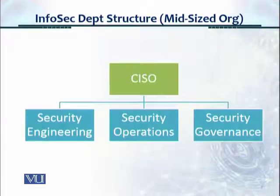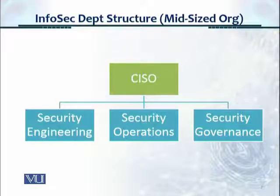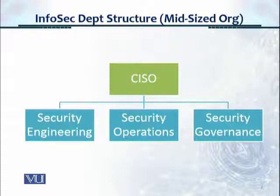Here we have a smaller organization structure. You have a CISO leading three teams or three units: security engineering, which covers domain knowledge and technical expertise; security operations, which looks after day-to-day functions; and security governance, covering policy, awareness, training, compliance, and audit activities.